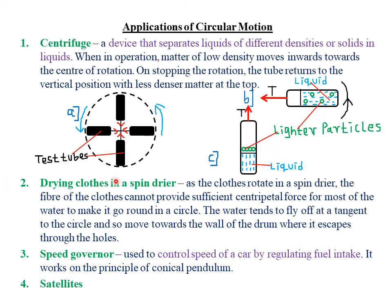The second application is in drying cloth in a spin dryer. As the cloth rotates, the fibers cannot provide sufficient centripetal force for the water to rotate in a circular path. Therefore, the water flies off at tangents to the circle, moves toward the wall of the drum, and escapes through holes — thus drying the cloth.